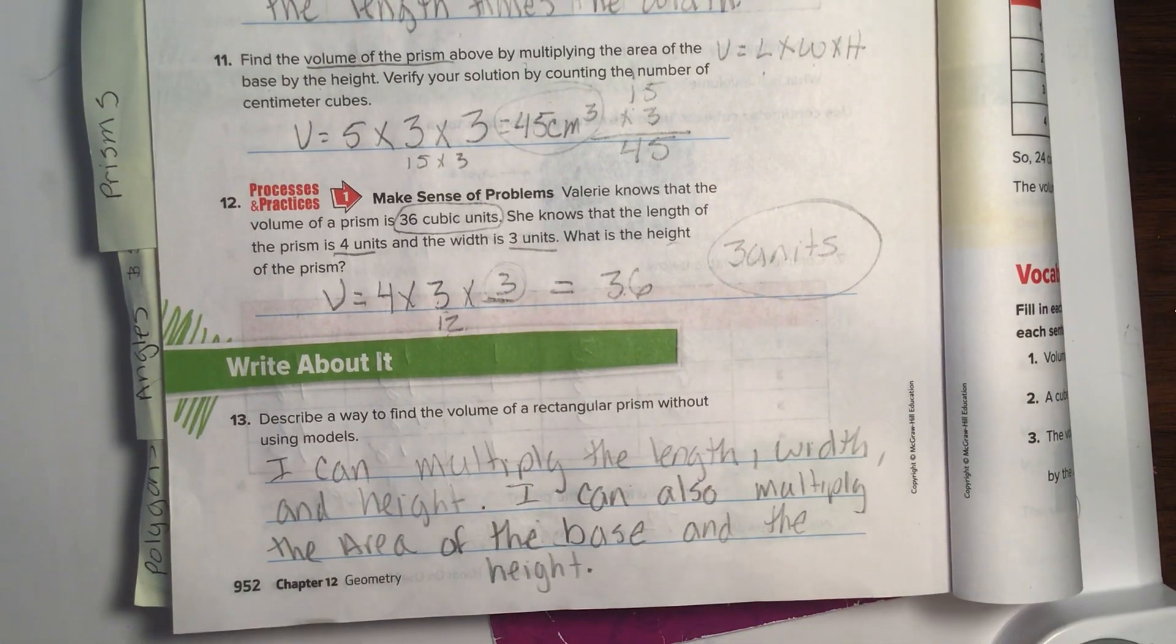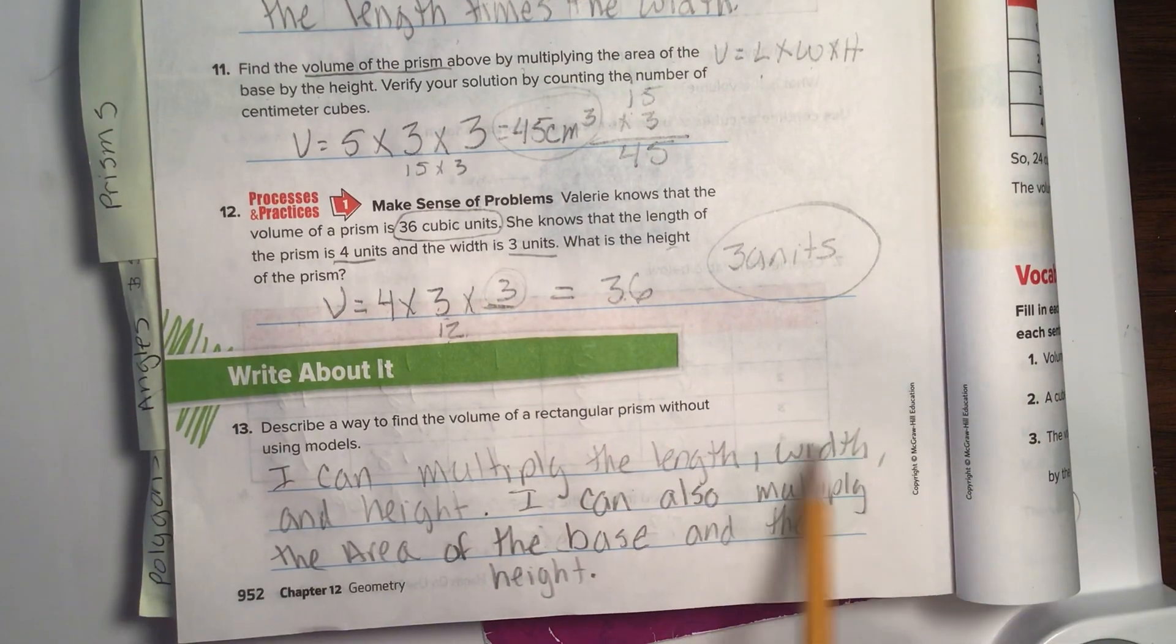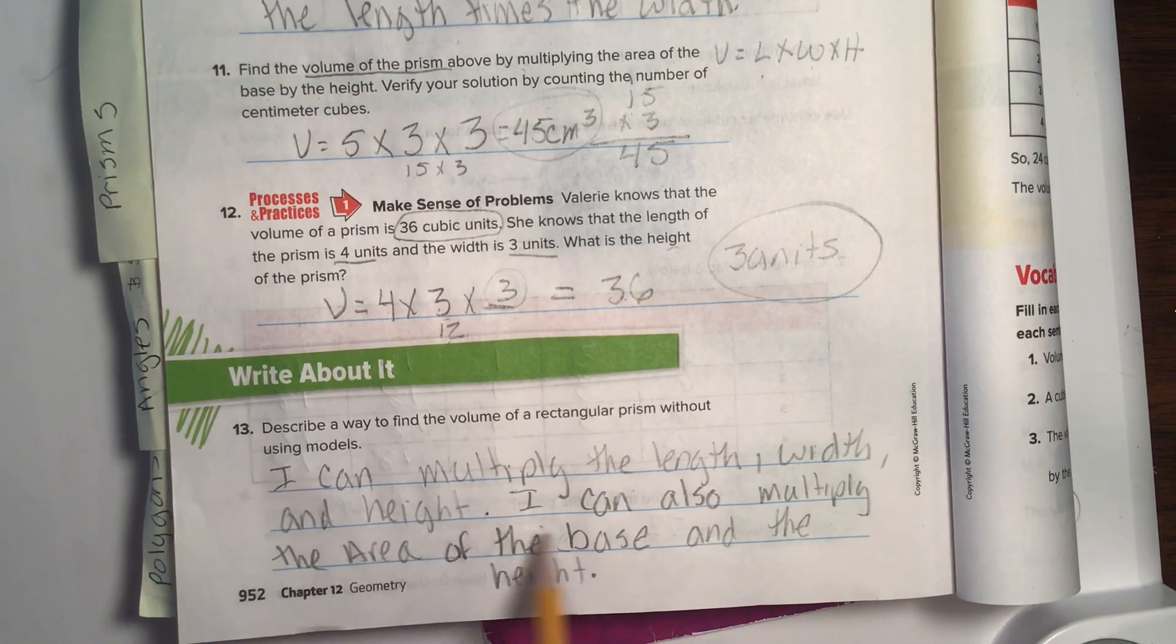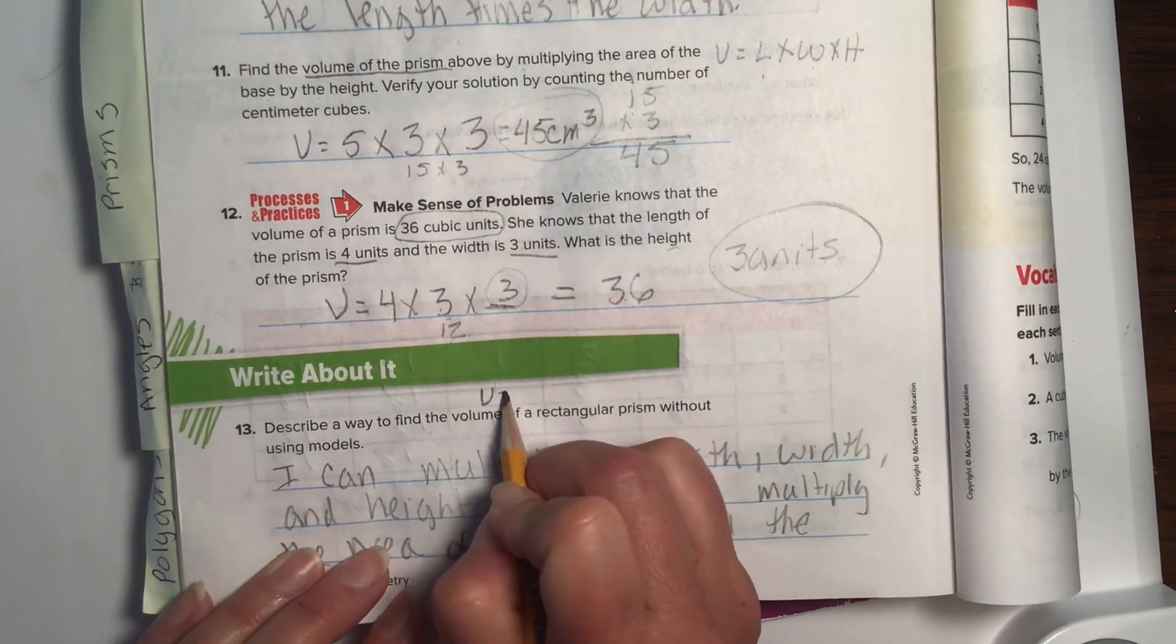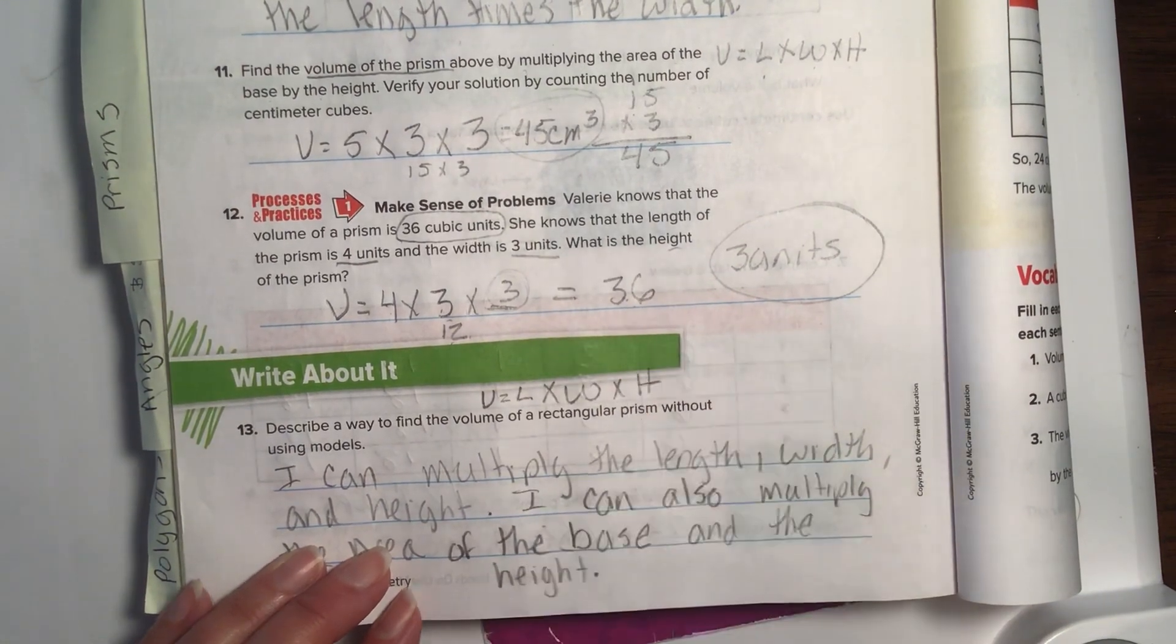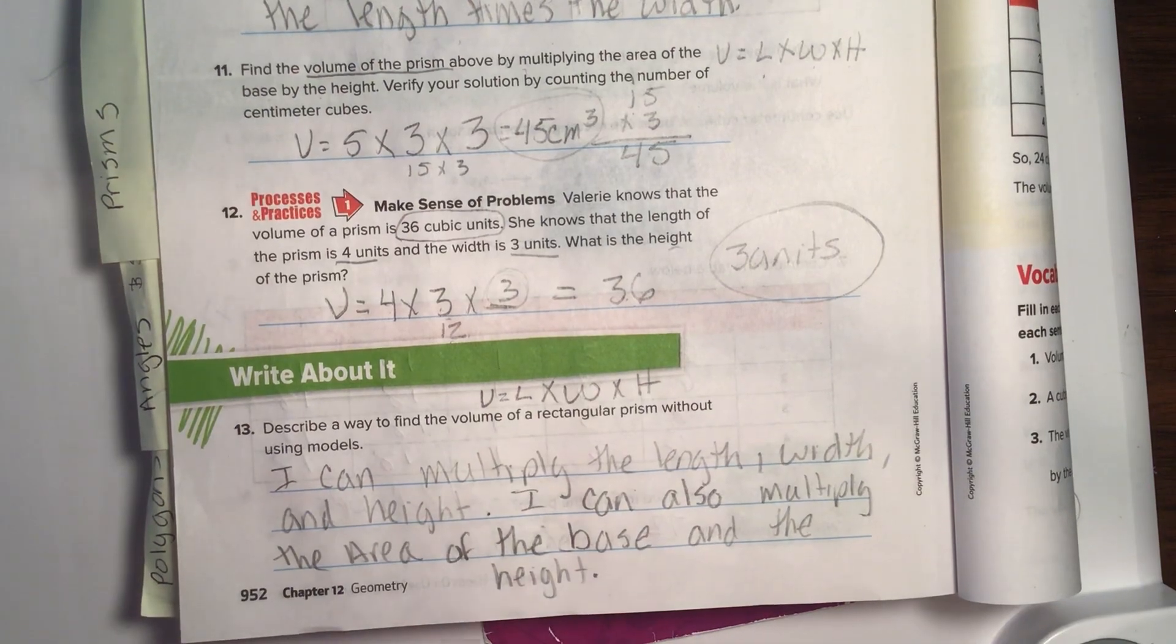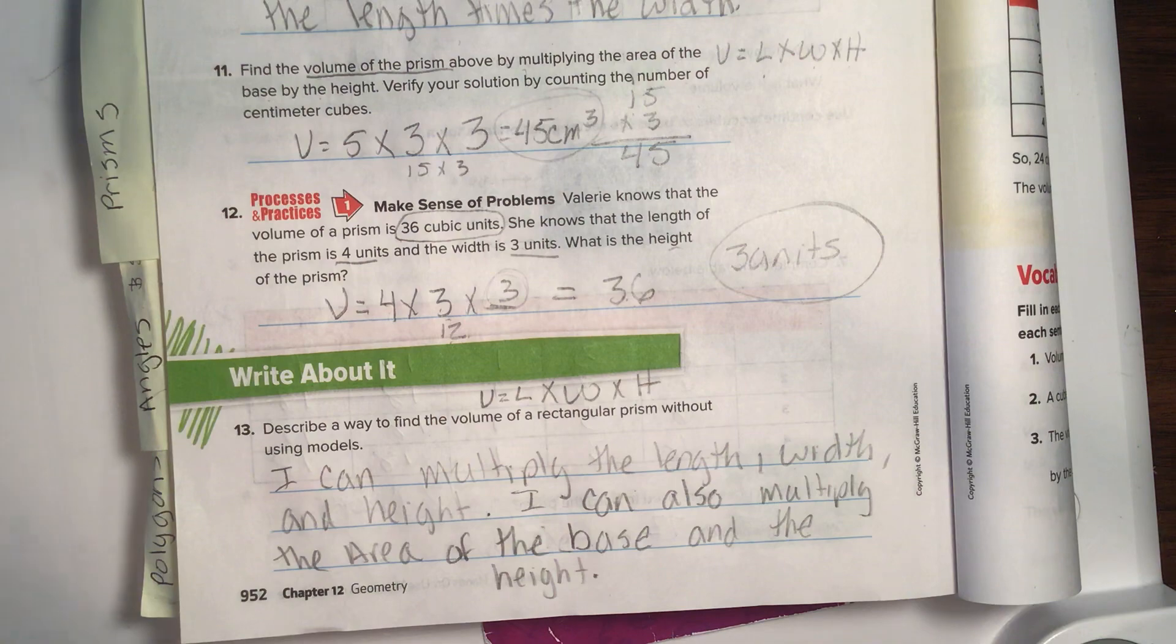Number 13. Describe a way to find the volume of a rectangular prism without using models. I can multiply the length, width, and height. I can also multiply the area of the base and then the height. Pretty much saying this. Volume equals length times width times height. Ta-da! Good job. Go ahead and send me a short video of you flipping through these pages so I can see that you followed along on this guided practice. Then move to your Lesson 8 Hands-On Models to Find Volume on page 953. You'll find that next video waiting for you on your daily agenda. Thank you.